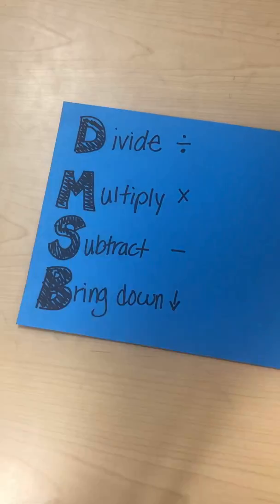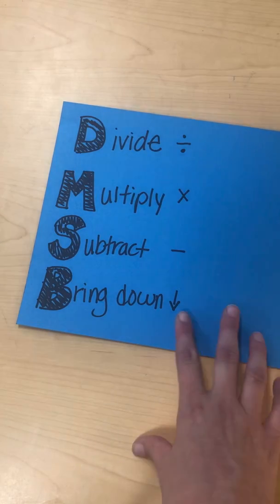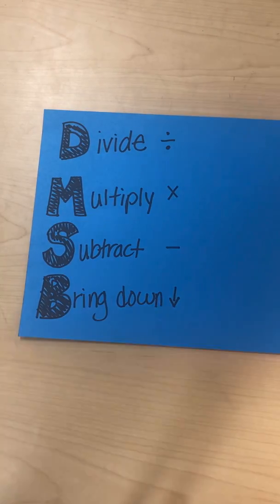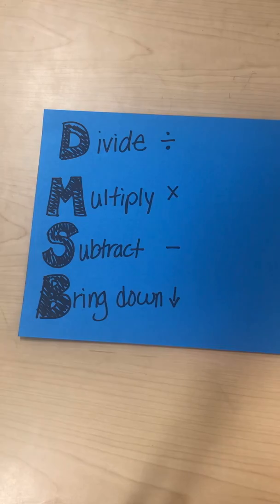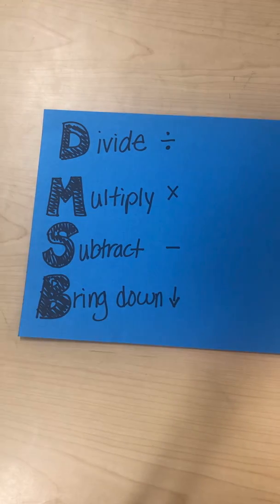Those are the steps for long division: divide, multiply, subtract, bring down. Once you go through the steps, if you still have numbers left you repeat the steps again, and you just keep going until you're done bringing numbers down. Good luck!